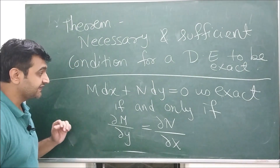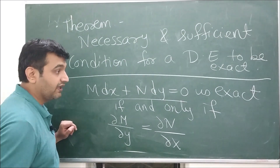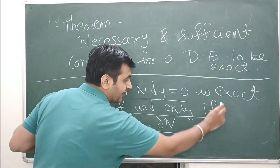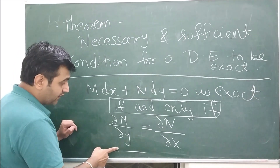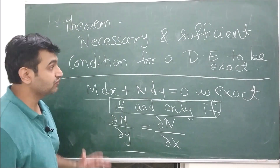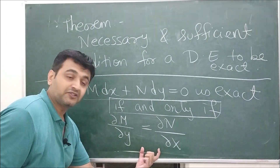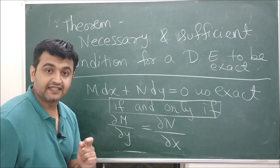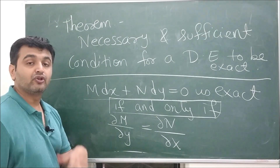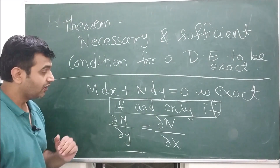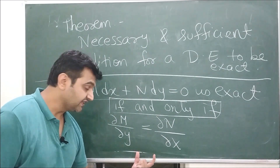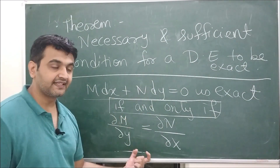Here is the answer to the first question: the necessary and sufficient condition theorem. The theorem states that for a first order linear differential equation M dx + N dy = 0, a function u exists (i.e., the equation is exact) if and only if ∂M/∂y = ∂N/∂x. This is the existence theorem: whenever these two partial derivatives are equal, u will definitely exist, and u = c will be the solution. It is necessary and sufficient — exact implies the condition holds, and the condition implies exactness.